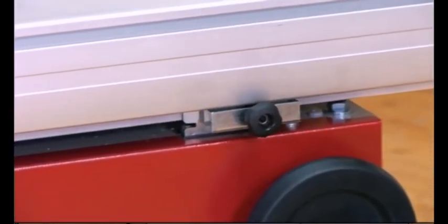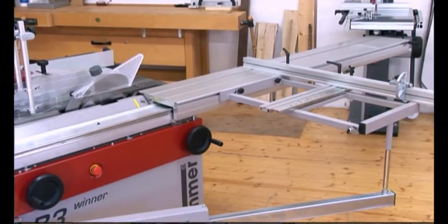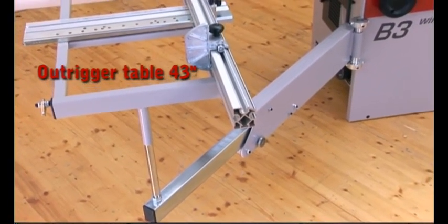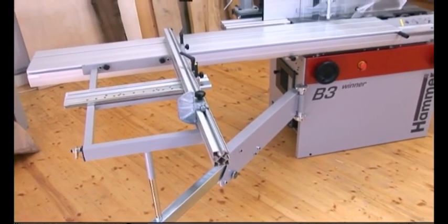The sliding table can be locked in its central position. The 2000mm sliding table and the 1100mm outrigger table ensure a sizeable working surface for processing large or heavy work pieces.